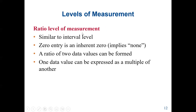The last level is the ratio level of measurement. This is similar to interval level, but zero entry is an inherent zero — it implies none. For example, if body weight is zero, it means the person does not exist. Or if a bank account is zero, it means there is no money. A ratio of two data values can be formed, meaning we can perform multiplication, division, etc., and one data value can be expressed as a multiple of another.